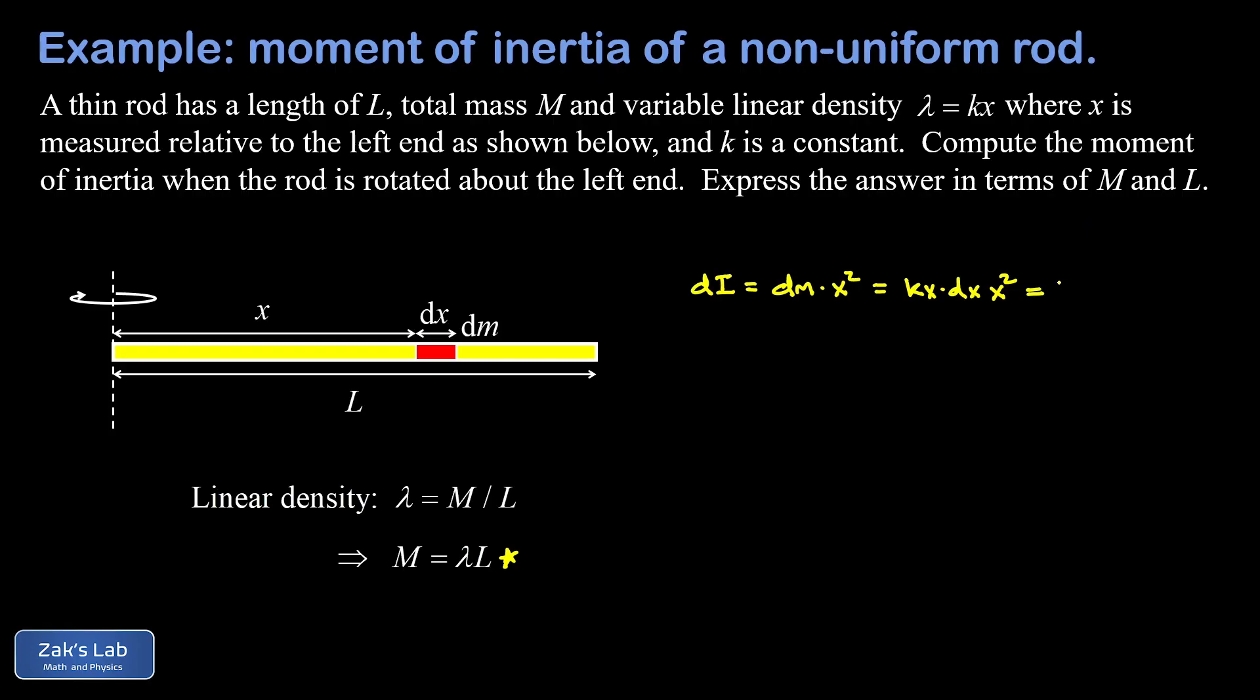Now just cleaning things up a little bit, I can write this now as kx cubed dx. And I have my moment of inertia contribution for that one little slice.